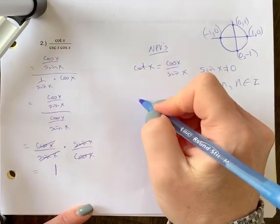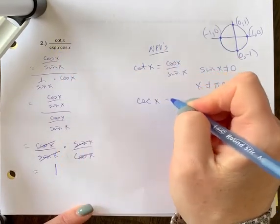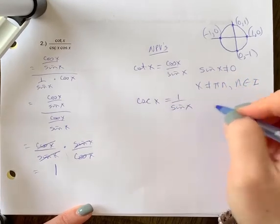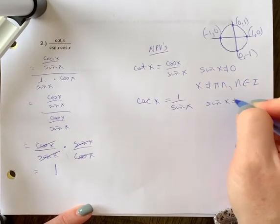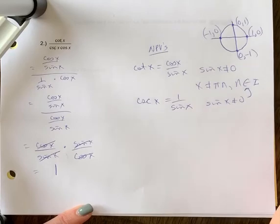Let's look at cosecant x. Cosecant x is equal to 1 over sine x. We have the same scenario where sine x cannot equal 0. So once again, those are your NPVs.